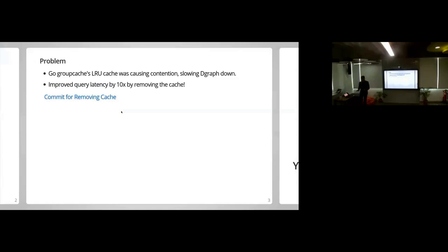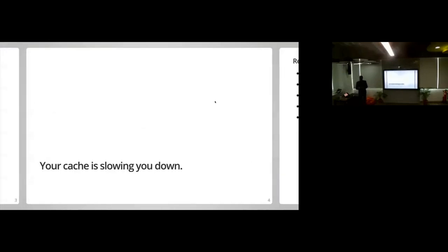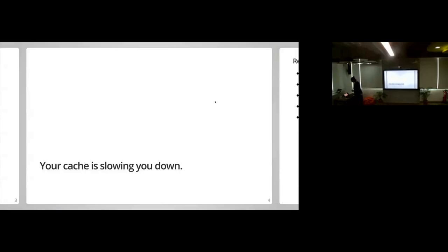We did not realize this for a long time. But at some point we did, and I remember doing this commit where I just removed the cache, and our query latency improved 10 times. It was incredible. Badger was doing a lot better job than we thought. So you could imagine this — the cache was actually slowing things down. So we looked around, and that's what the blog post is about.